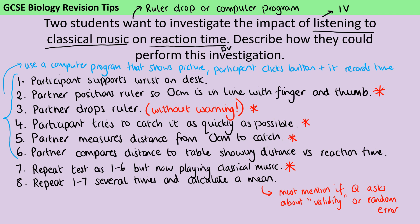Now we need to think about what you actually need to get six marks. You need a method that will work and allow you to answer the question. You've got to have the ruler positioned correctly before you start, the ruler being dropped, the person catching the ruler, the measurement being made, and then repeating this with classical music so you have something to compare. The conversion to time using the distance table is a good inclusion but not strictly vital — as long as your method includes those five key points, that's enough to get you the six marks.